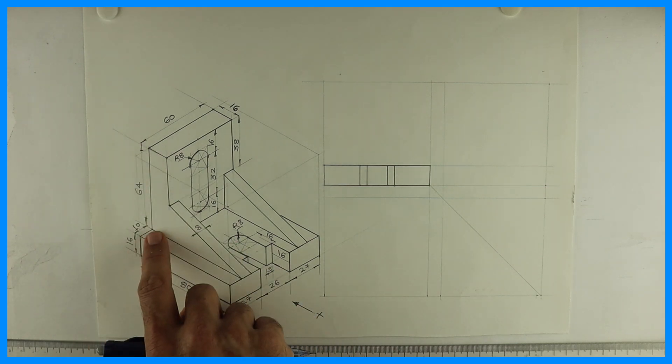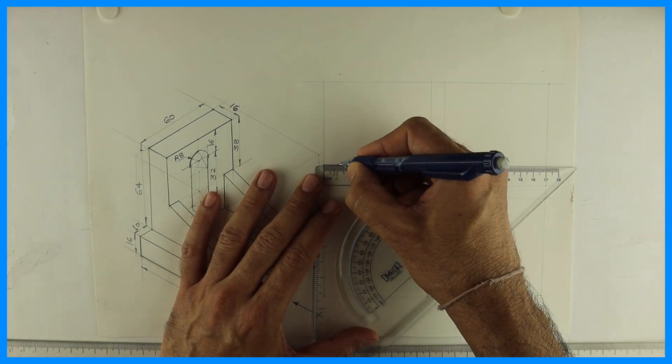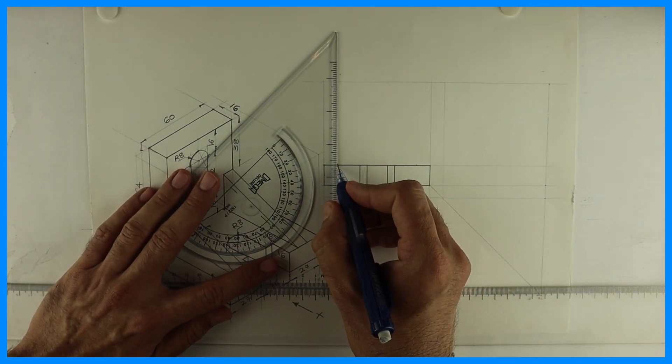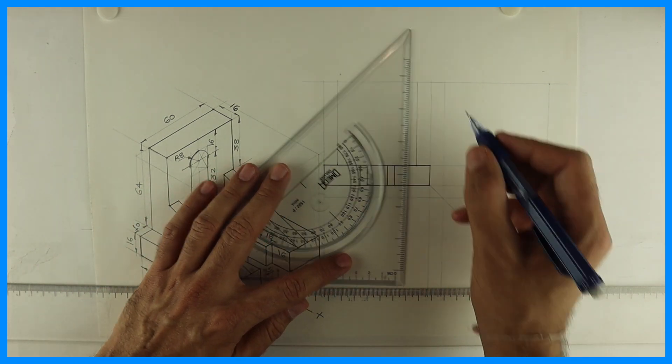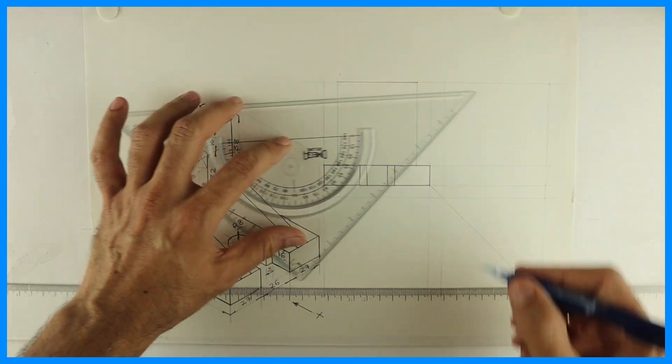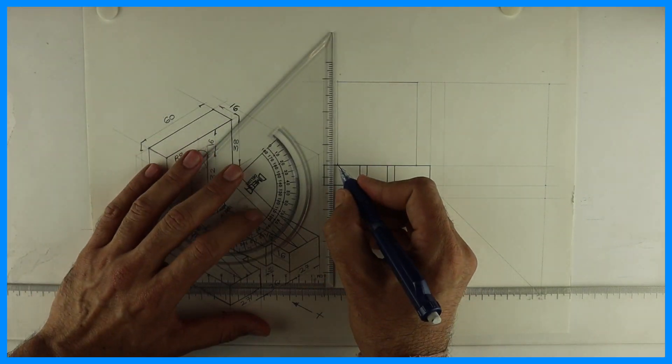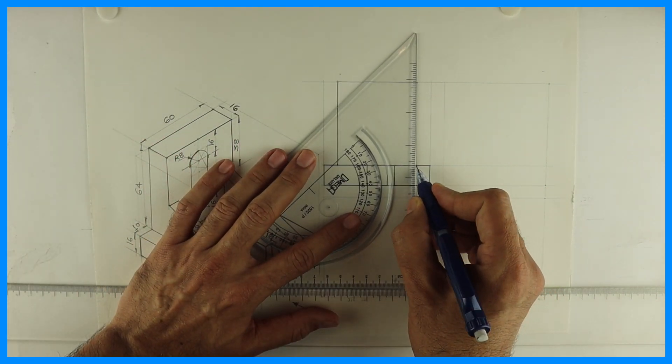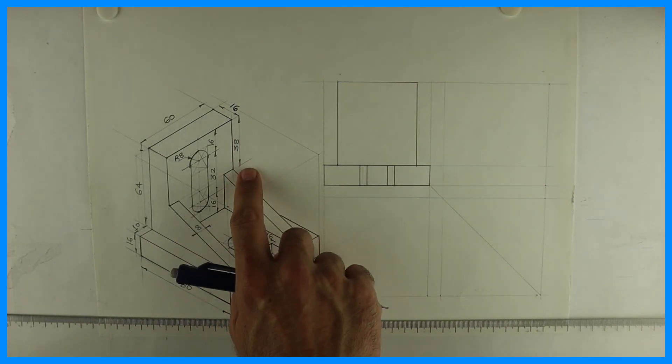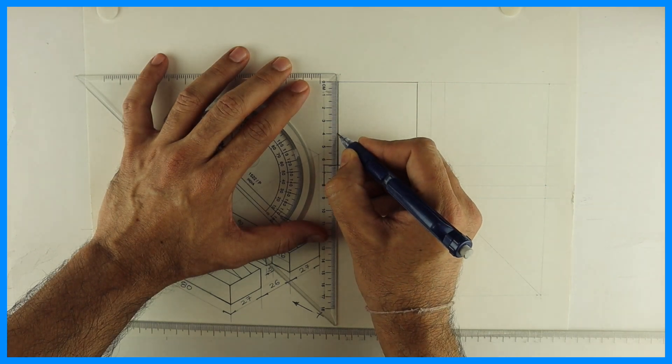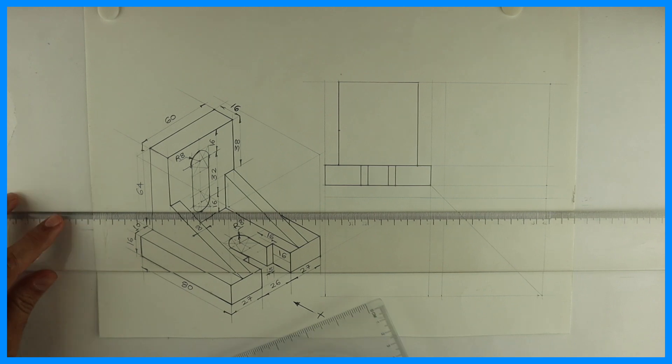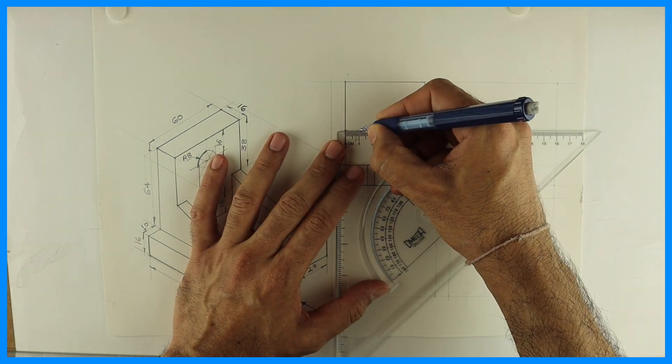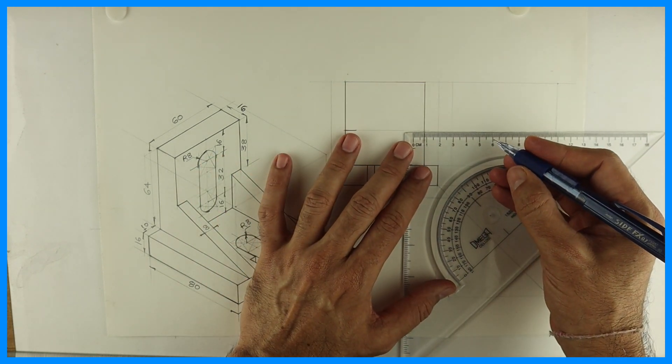Now this part, how much is this? 10. So take 10 from here, 10 from here, and we'll draw vertical lines. This height is 64. Now this is 38, so you have to come down by 38. Draw line. Now you mark 8mm here, also mark 8mm.